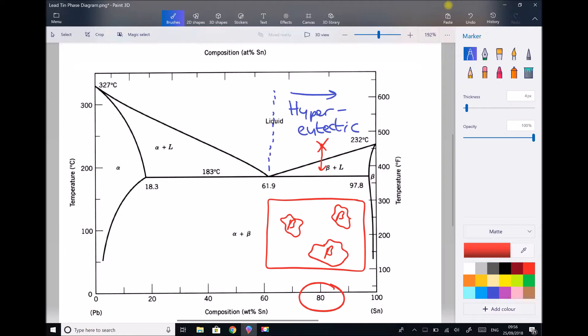And the surrounding area is liquid, because we have beta plus liquid at that temperature. If we were to continue to cool, but not quite reach the eutectic temperature of 183 degrees C, then each of those beta regions would increase in size. As they increase in size, we would be kicking beta out of the composition.